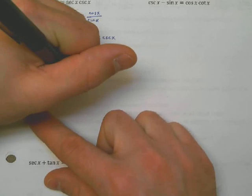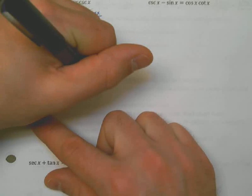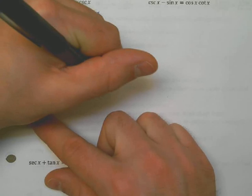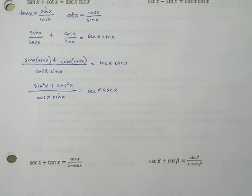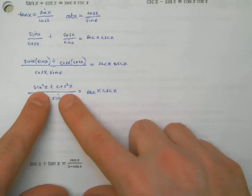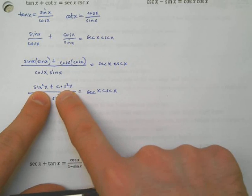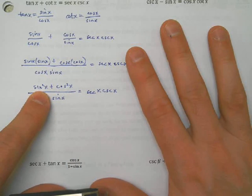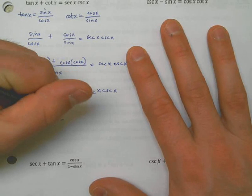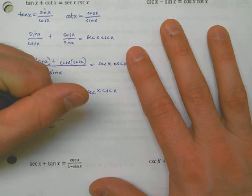Now I see a sine squared, so now is an opportunity to use the Pythagorean identities. I know that sine squared x plus cosine squared x equals 1. If I rearrange this to get 1 minus sine squared, I subtract sine squared from both sides — I'm left with cosine squared of x on the left and 1 minus sine squared on the right. So 1 minus sine squared is the same thing as cosine squared. That means cosine squared of x over sine of x — those must be equal to each other.